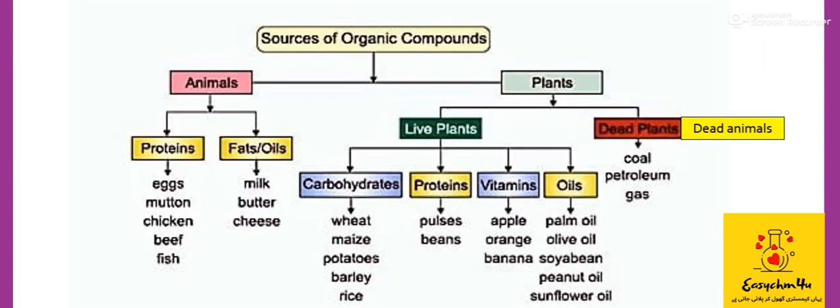The sources of organic compounds can be animals and plants, and these animals and plants can be in living form or in dead form. For example, living animals and plants give us proteins, fats, and oils.